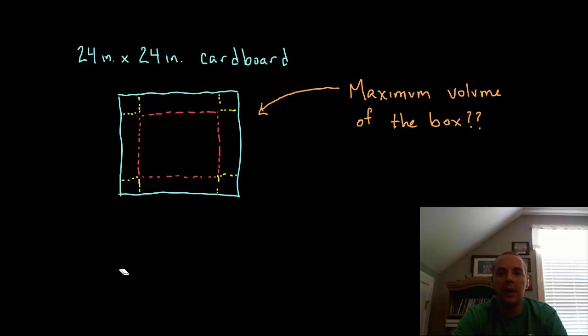Okay, here we're going to look at one of the classic optimization problems that has us try to find the maximum volume of a box that we get by cutting corners out of a square piece of cardboard and folding the sides up.